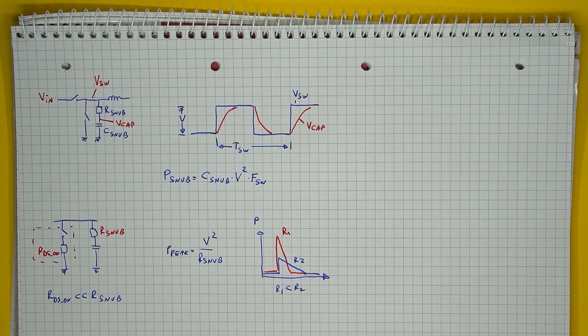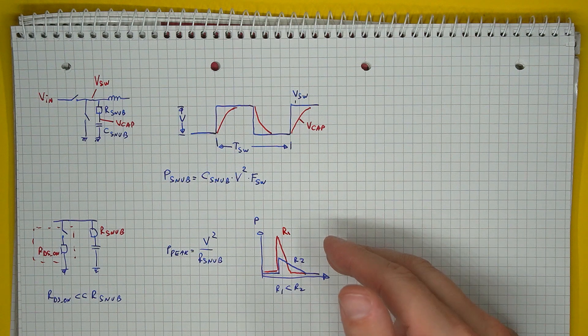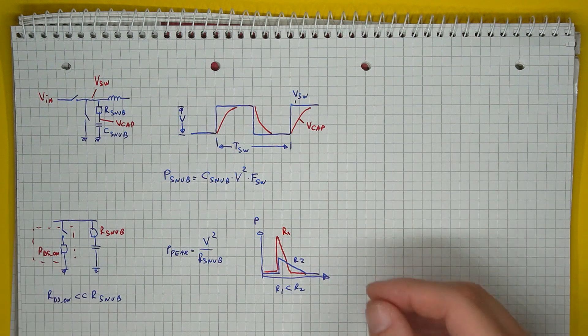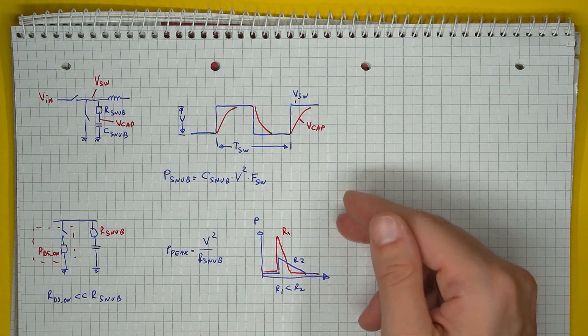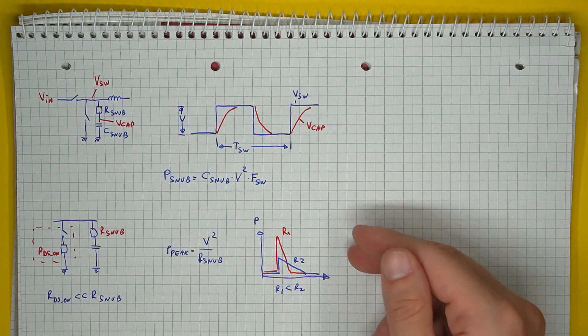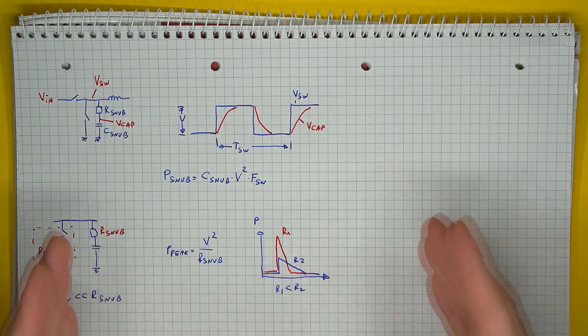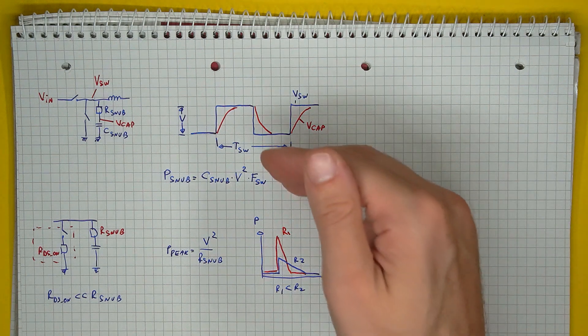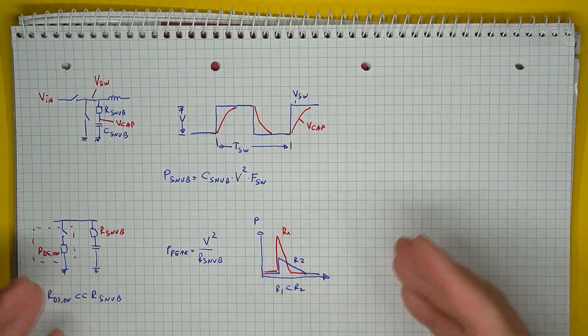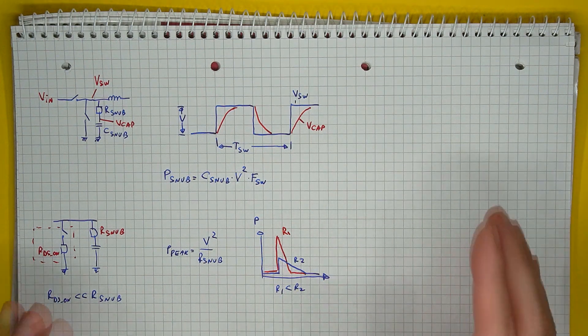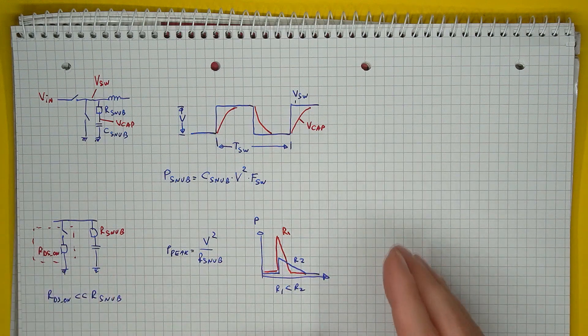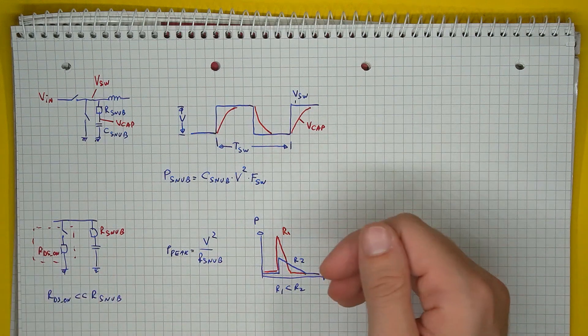RDS on if it's a MOSFET, is far smaller than the snubber resistor. This assumption will make all the power that is dissipated on the snubber to get dissipated on this snubber resistor. Last thing to observe is that the peak power dissipated on the resistor is dependent on the resistor's value. A larger resistor will have a smaller power peak, but the same amount of total power dissipation, which is determined by the capacitor.